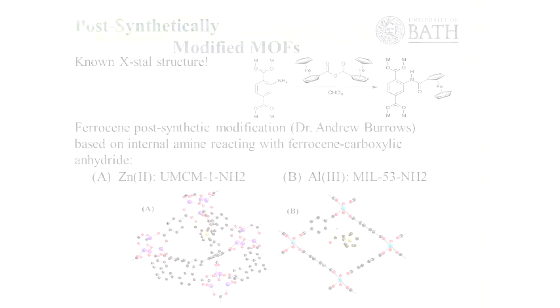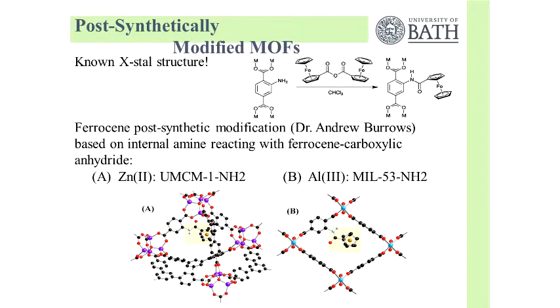In porous materials, every cage contains an amine, and we use this simple coupling process to bring ferrocene into the structure. You just boil the porous material with the anhydride, and you end up with the structure where the ferrocene is inside of the cage.